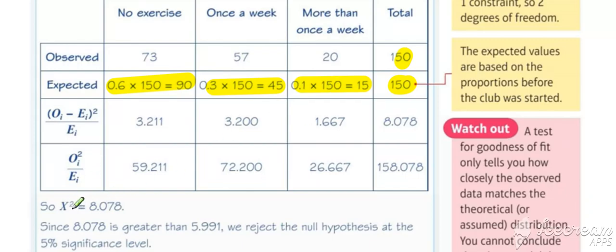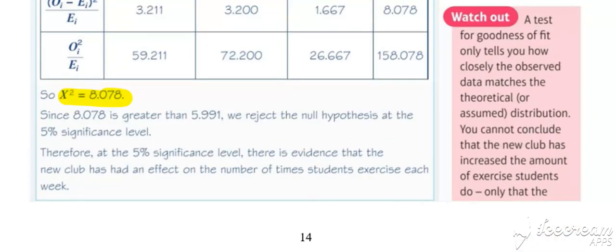And you work out your chi-squared to give you 8.078. And then we can compare with our critical region. On this occasion, our goodness of fit stat is greater than the critical region for this test at this significance level. And therefore, there is evidence that the new club has had an effect on the number of times students exercise each week.